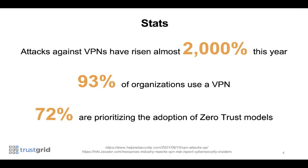A few stats have emerged over the past year worth highlighting. Attacks on VPNs have risen 2,000% this year — a massive spike, significant because these connections are so ubiquitous. 93% of organizations use VPNs. But the good news is that three out of four IT executives say they are prioritizing the adoption of zero trust models.